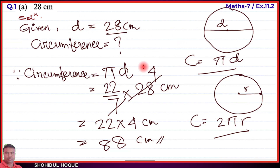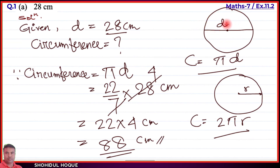So for a circle with diameter 28 centimeters, the circumference is 88 centimeters. The circumference is the boundary of the circle. For other figures it is called the perimeter, but for a circle it is called the circumference. That completes part A. Now moving to part B.